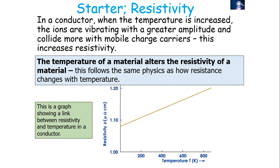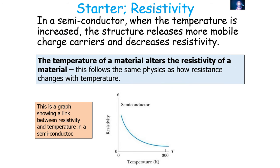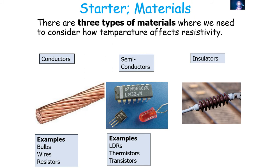In a conductor, when temperature increases, the ions vibrate at greater amplitude and collide with more mobile charge carriers, increasing resistivity. In a semiconductor such as a thermistor, as temperature increases, more energy is put into the circuit, releasing more mobile charge carriers from its structure into the circuit. This increases the number of mobile charge carriers, lowers resistivity, and increases conductance. The small increase in collisions from extra charge carriers is negligible compared to the overall effect of more carriers. For an insulator, conductivity and resistivity are largely unaffected by temperature, as it has very few mobile charge carriers.